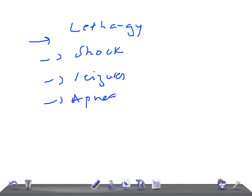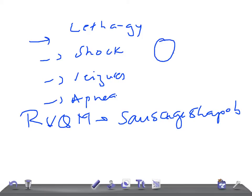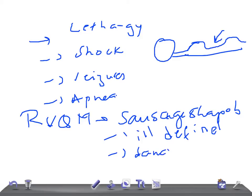Remember the important point for USMLE and MRCPCH examination: try to look for right upper quadrant mass. How they define it: maybe a sausage-shaped, ill-defined mass. Then we have Dance's sign. What's Dance's sign? Dance's sign is the absence of bowel in the right lower quadrant. Remember, not right upper quadrant, it's right lower quadrant.